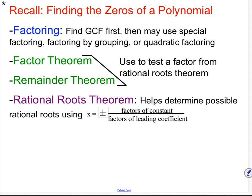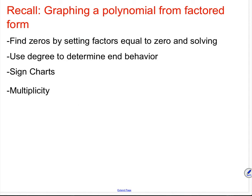You can factor by finding the greatest common factor first, then using special factoring, factoring by grouping, or quadratic factoring. If it's bigger than a quadratic or you can't factor by grouping, you can use the factor theorem and remainder theorem to test factors from the rational root theorem. Recall from graphing a polynomial in factored form: find zeros by setting factors equal to zero, use the degree to determine end behavior, and use the multiplicity of your zeros.